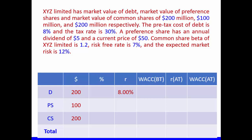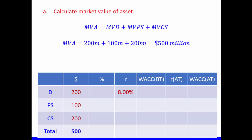We put the values into our WACC table — market value of debt, market value of preference shares, and market value of common shares — along with the before-tax cost of debt. The first part is to calculate market value of assets, which is market value of debt plus market value of equity. Since equity is split into preference shares and common shares, the formula is: market value of debt + market value of preference shares + market value of common shares, giving a total of $500 million.